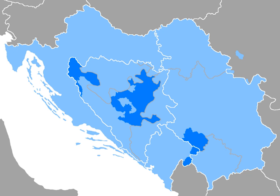The modern Bosnian standard took shape in the 1990s and 2000s. Lexically, Islamic Oriental loanwords are more frequent. Phonetically, the phoneme H is reinstated in many words as a distinct feature of vernacular Bosniak speech and language tradition. Also, there are some changes in grammar, morphology and orthography that reflect the Bosniak pre-World War I literary tradition, mainly that of the Bosniak Renaissance at the beginning of the 20th century.